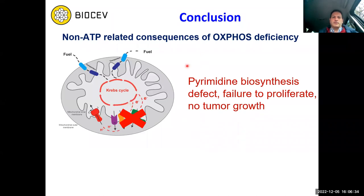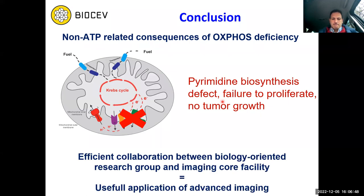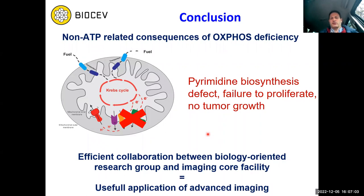So the effect of interfering with oxidative phosphorylation in cells — the fact that cells don't grow — is not due to the lack of ATP but due to the lack of biosynthesis of pyrimidines. This was a brief showing of the collaboration between a biology-oriented research lab and an imaging core facility, where not only NADH and NADPH imaging but also super-resolution and correlative light and electron microscopy experiments were used to dissect how cancer cells steal mitochondria from host cells and thereby recover their function.